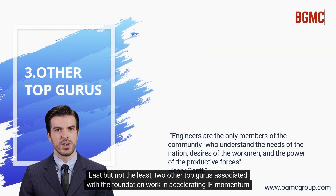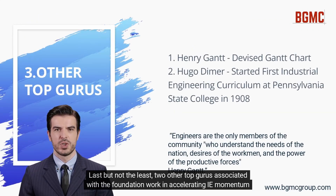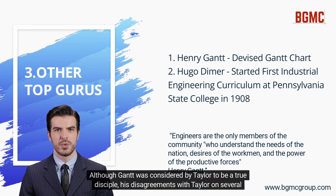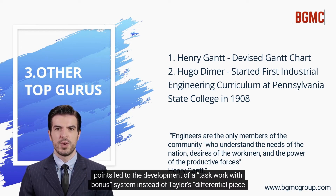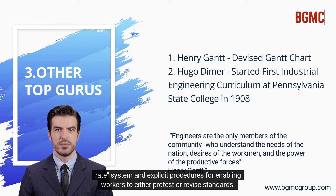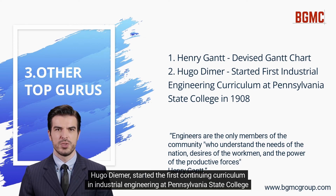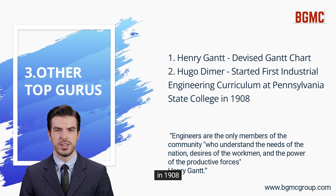Two other top gurus associated with the foundation work in accelerating IE momentum are Henry Gantt and Hugo Diemer. Although Gantt was considered by Taylor to be a true disciple, his disagreements with Taylor on several points led to the development of a task work with bonus system, instead of Taylor's differential piece rate system, and explicit procedures for enabling workers to either protest or revise standards. He is best remembered for devising the Gantt chart. Hugo Diemer started the first continuing curriculum in industrial engineering at Pennsylvania State College in 1908.